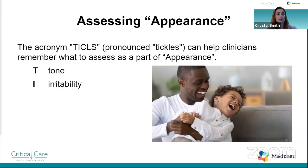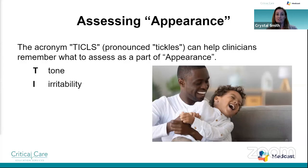Irritability — sometimes pediatric patients can't talk to us, so we look at whether they're happy and interacting with their caregiver, or crying and distressed. A really concerning sign is if they're unable to be stimulated to cry — for example, when you insert an IV cannula and they don't make any sounds or even withdraw. We also look at whether they demonstrate an abnormal cry, such as a high-pitched irritable cry showing signs of meningism, or whether they can be consoled by their parent once strangers leave the room.